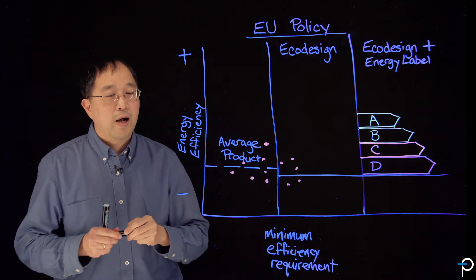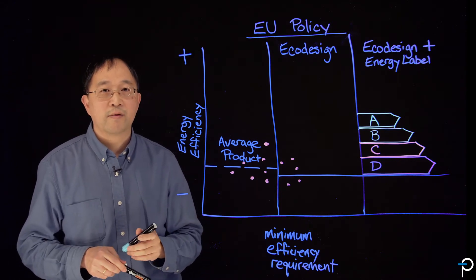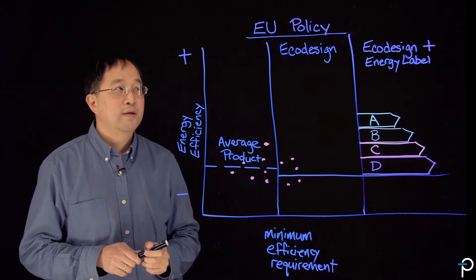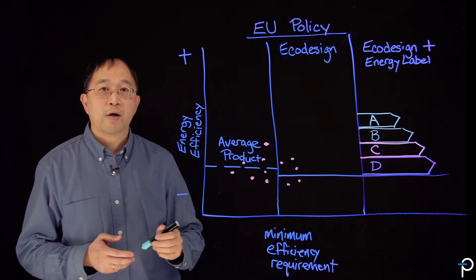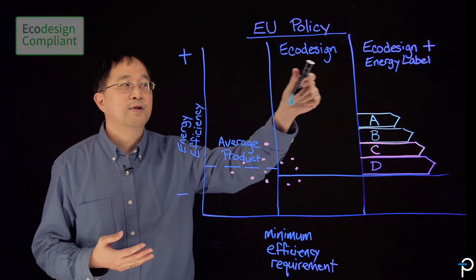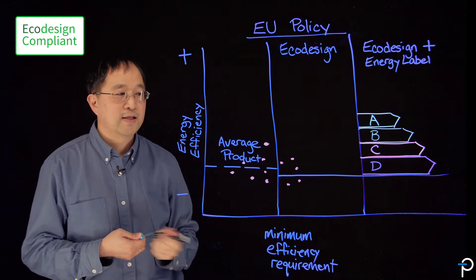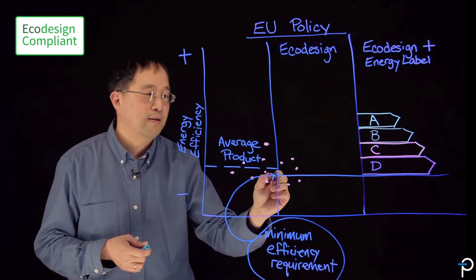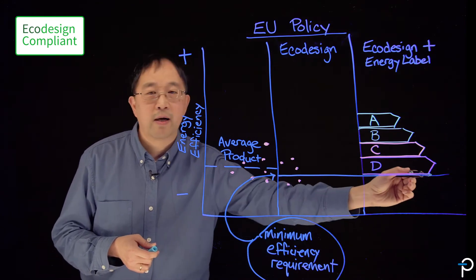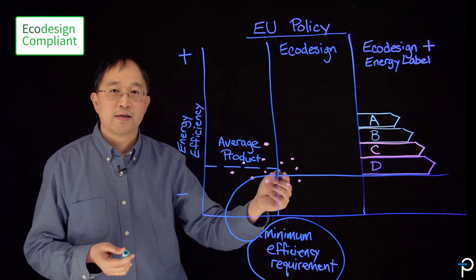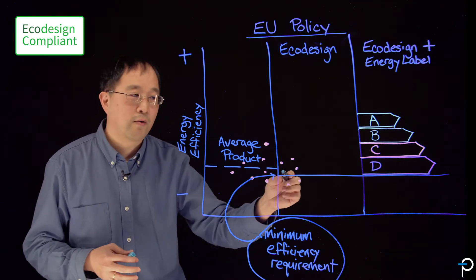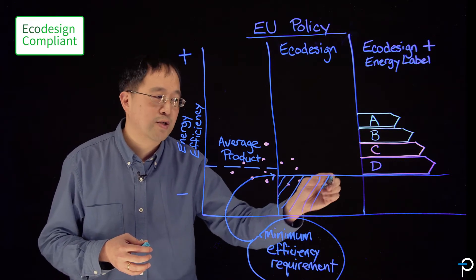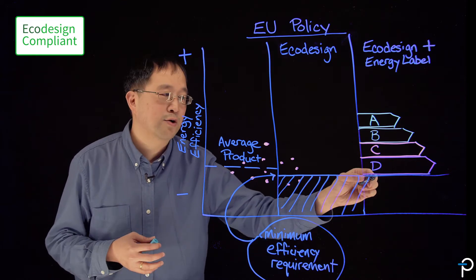So one policy instrument used by governments to improve and move up this average product efficiency is using regulations. In Europe, they have what is known as the Eco Design Directive. And what that does is it sets the minimum efficiency requirement shown by this solid line right here at the bottom. What that means is that any product that doesn't meet at least the numbers that are required for efficiency, as stated in the regulations, will not be allowed to be sold in the marketplace, in this case in Europe.